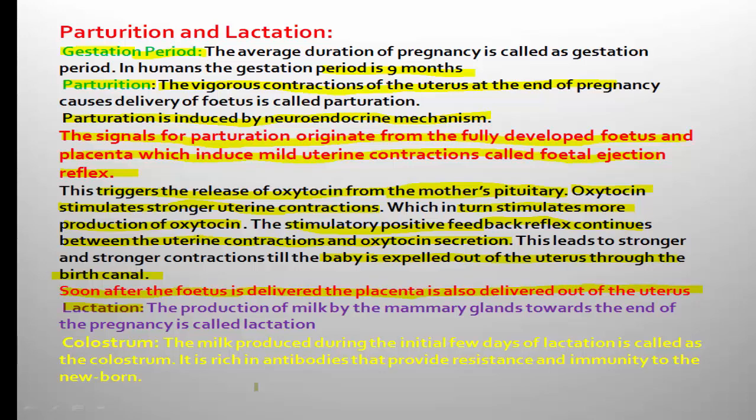The production of milk by the mammary glands towards the end of the pregnancy is called lactation. The milk produced during the initial few days of lactation is called colostrum, and it is rich in antibodies that provide resistance and immunity to the newborn.